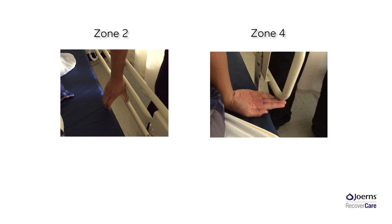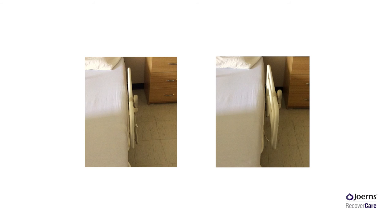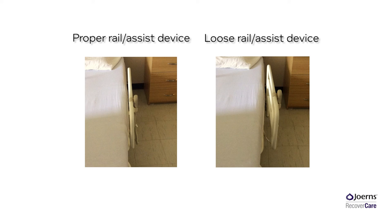Here are some of the most common findings when it comes to entrapment testing. The picture on the left shows a gap between the rail and the mattress being too large — this would cause a Zone 2 fail once there is any weight put on the mattress. The picture on the right highlights a Zone 4 failure; the top part of the mattress is well below the bottom part of the rail. A properly fitted rail or assist device should sit flush, whereas a loose rail or assist device — commonly found on beds using one bolt and nut — can pivot, causing possible Zone 2 and Zone 3 failures. Regular tightening of these rails is required.